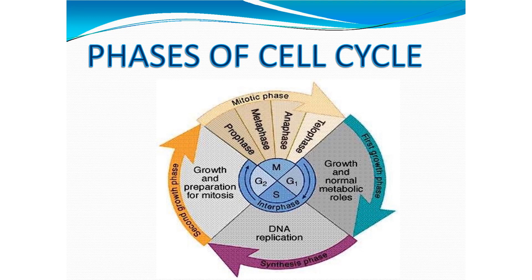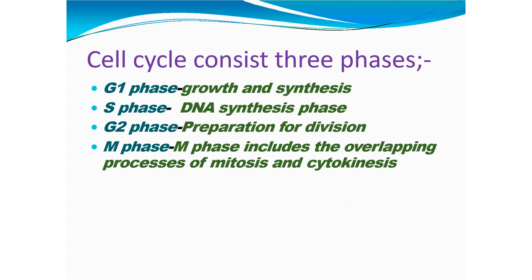The first is the G1 phase, which is called the first growth phase. The second is the S phase, also called the synthesis phase. The third is G2, the second growth phase and preparation for mitosis. The cell cycle consists of G1 phase, S phase, and G2 phase. G1 phase is the growth phase; S phase is where DNA synthesis takes place; and G2 phase is where the cell prepares itself for cell division.